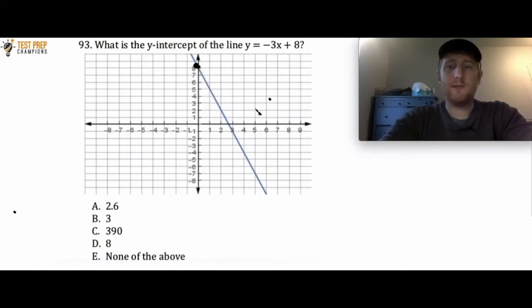But you could also do it, if you weren't given this graph, you could just use this equation, y equals negative 3x plus 8. All you would do is put a 0 in for x, and if you put 0 in for x here, negative 3 times 0 is just 0. You're left with the 8, so that would also tell you that y equals 8, the y-intercept equals 8.